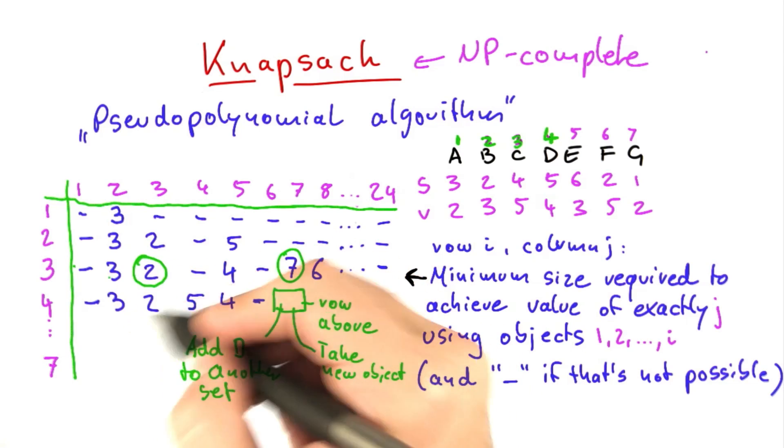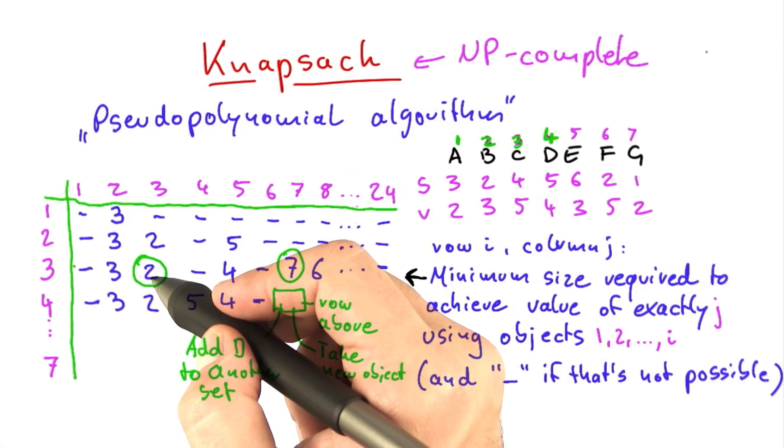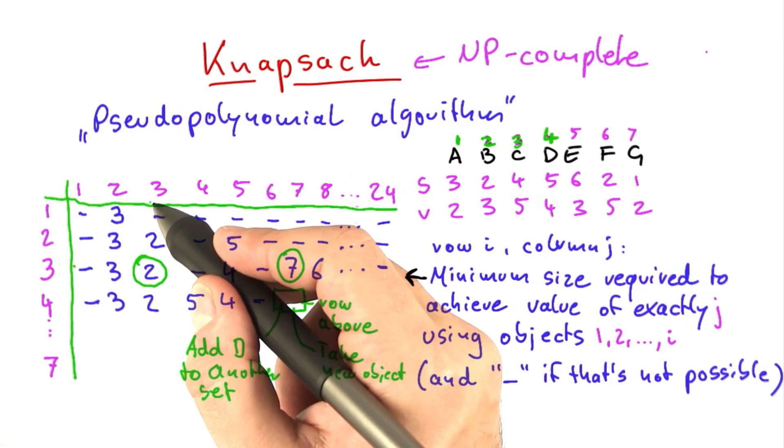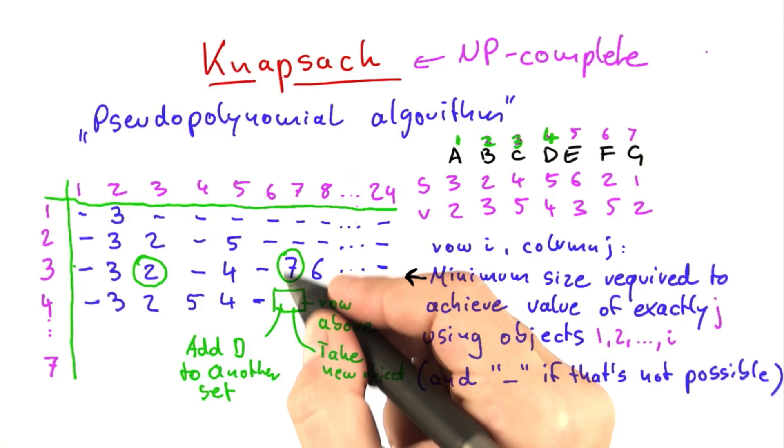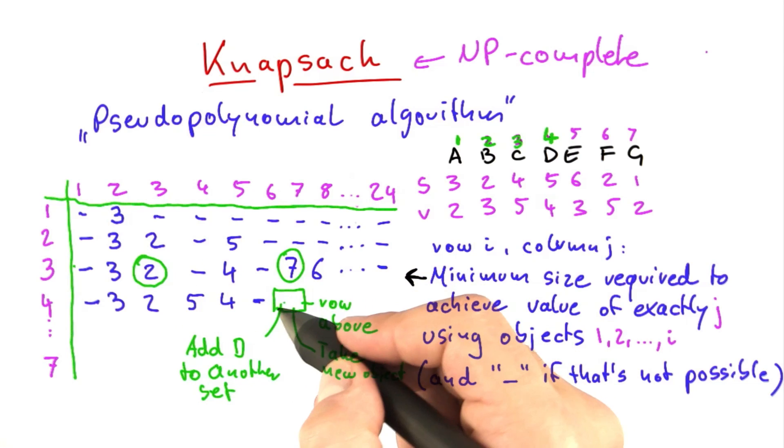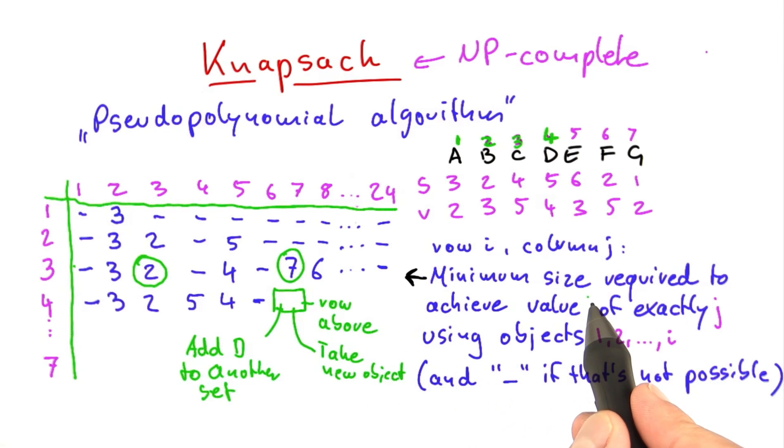And we know just from looking at this table here that with size 2 we can already achieve a value of 3. d has a value of 4 and it has a size of 5, so 2 plus 5 is 7, which is actually now the same as this one here, but of course you would be taking the minimum of the required sizes. So here we would enter a 7.